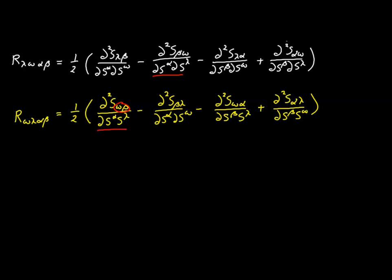The covariant metric tensor is symmetric, so we can swap the order of these indexes anytime we want to. So these two are the negative of each other, this is the negative of this, and every one of these terms has a negative counterpart in the other expression. That means the Riemann tensor is anti-symmetric with respect to the first two indexes.